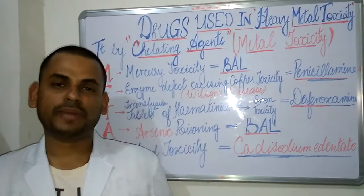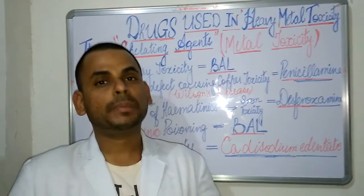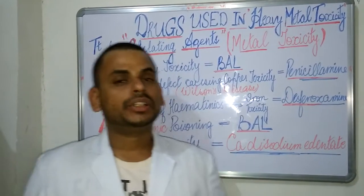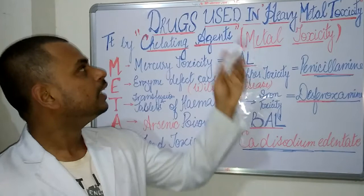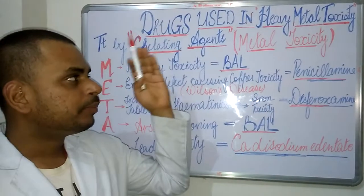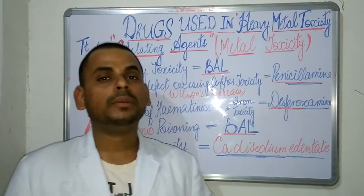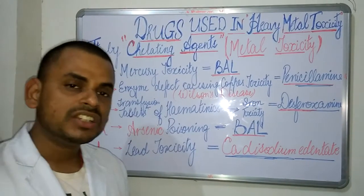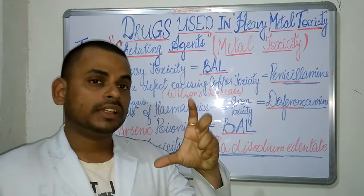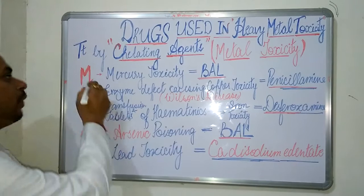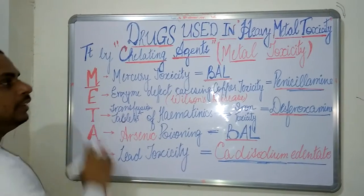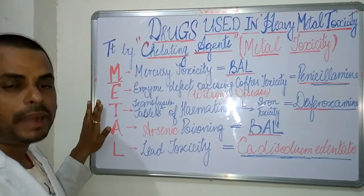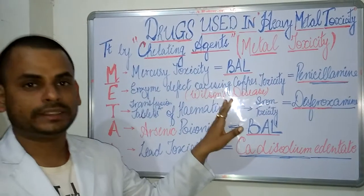Welcome to the next session of my pharmacology series. Today the topic is drugs used in heavy metal toxicity. I have a mnemonic or short trick to easily remember these drugs by looking at the letters of the word METAL, where every alphabet corresponds to one toxicity and its related drug.